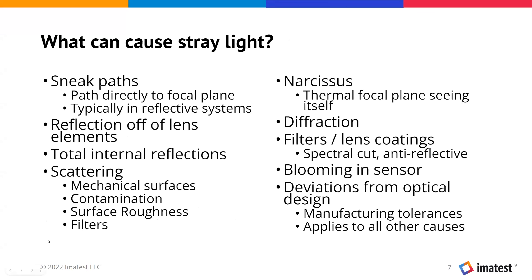What can cause stray light? There are many potential causes. You'll have reflections off various lens elements, the housing for the lenses. You could consider diffraction spikes to be stray light. Filters and lens coatings can produce reflections. There are a whole range of optomechanical design issues that can lead to stray light.